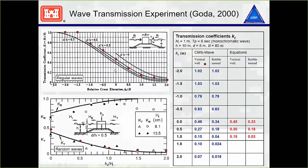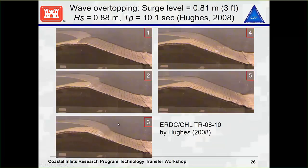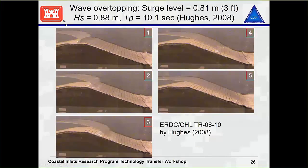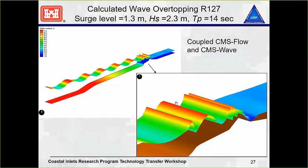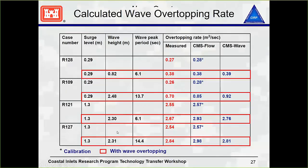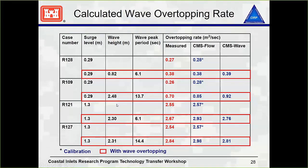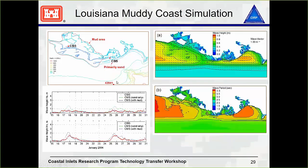Just a few graphs here of some experiments we've done in the past, comparing different wave breaking and transmission flow efficiency and how CMS-Wave did in correlation with actual results from the experiments. And again, calculations and comparisons with overtopping from some experiments as well.